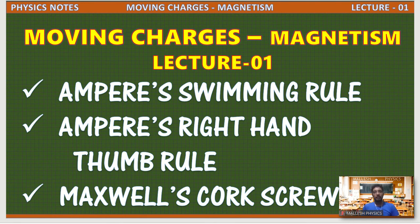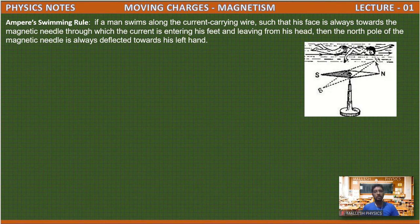To study the magnetic field — its direction, magnitude, and what factors it depends on — before learning all these things, you need to know these fundamental laws which we apply to find the magnetic field and direction of magnetic field. All three rules can be used to find the direction of magnetic field.